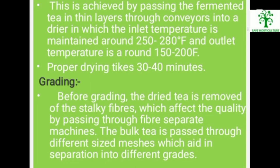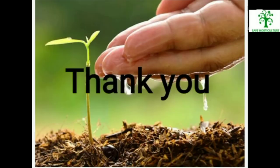Grading: before grading, the dried tea is removed of stalk fibers, which affect quality, by passing through fiber separator machines. The bulk tea is then passed through different size meshes which aid in separation into different grades. Thank you to all of you, and special thank you to Dr. Prashant Bakshi sir.